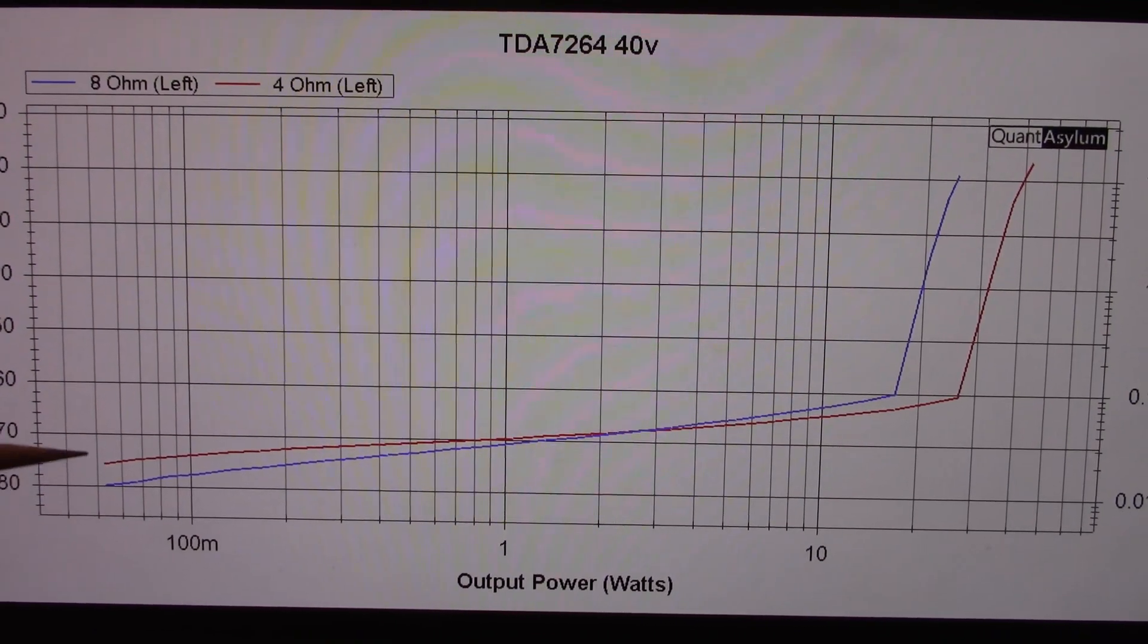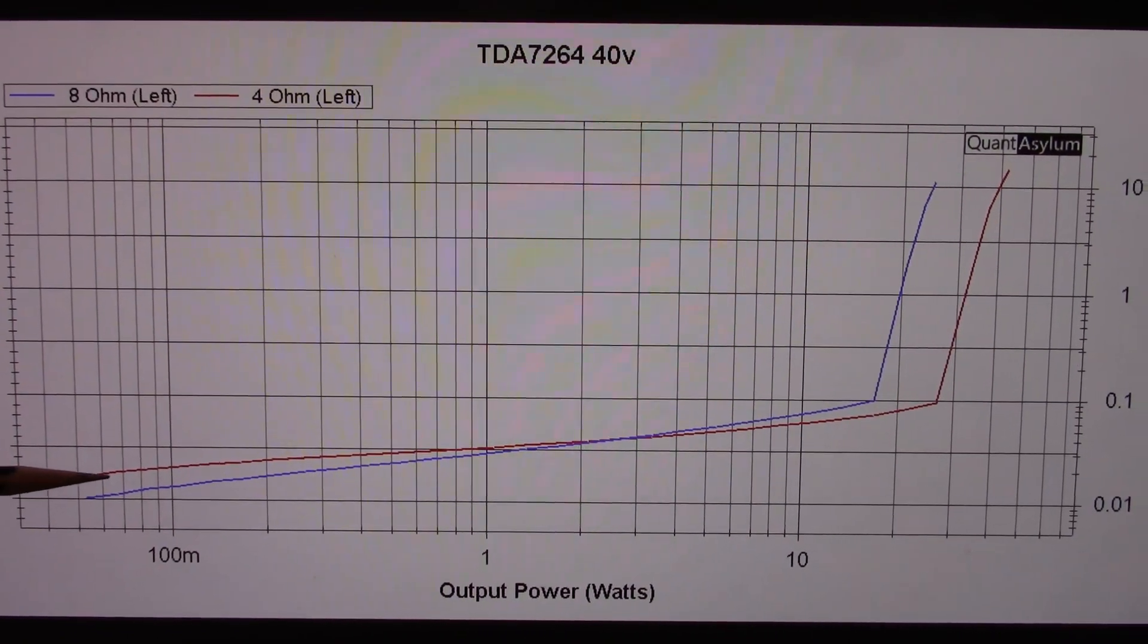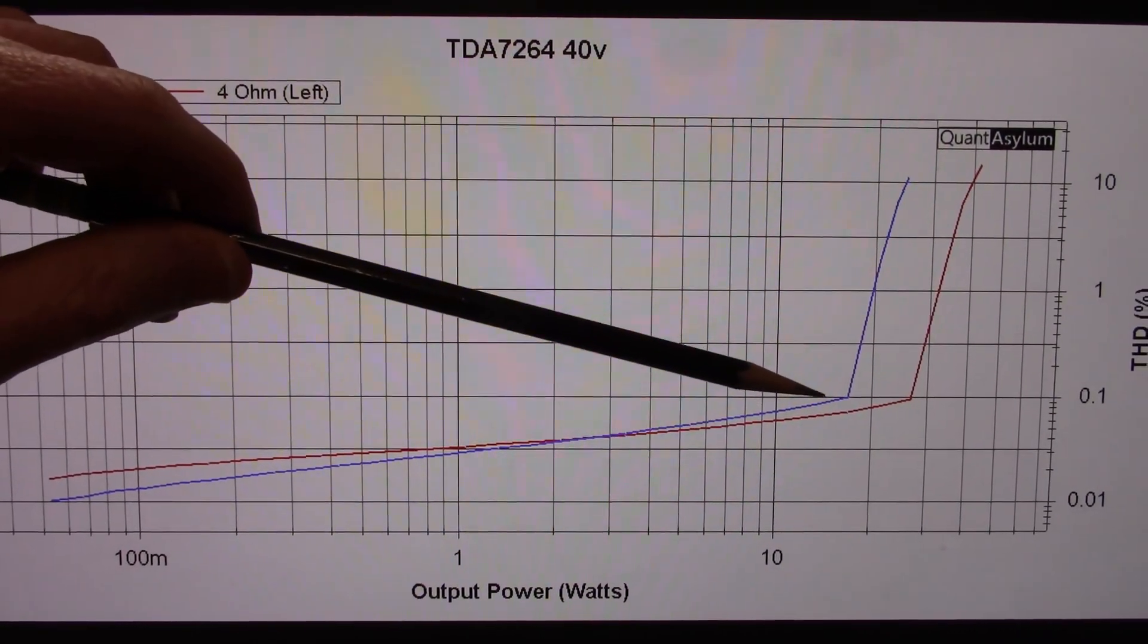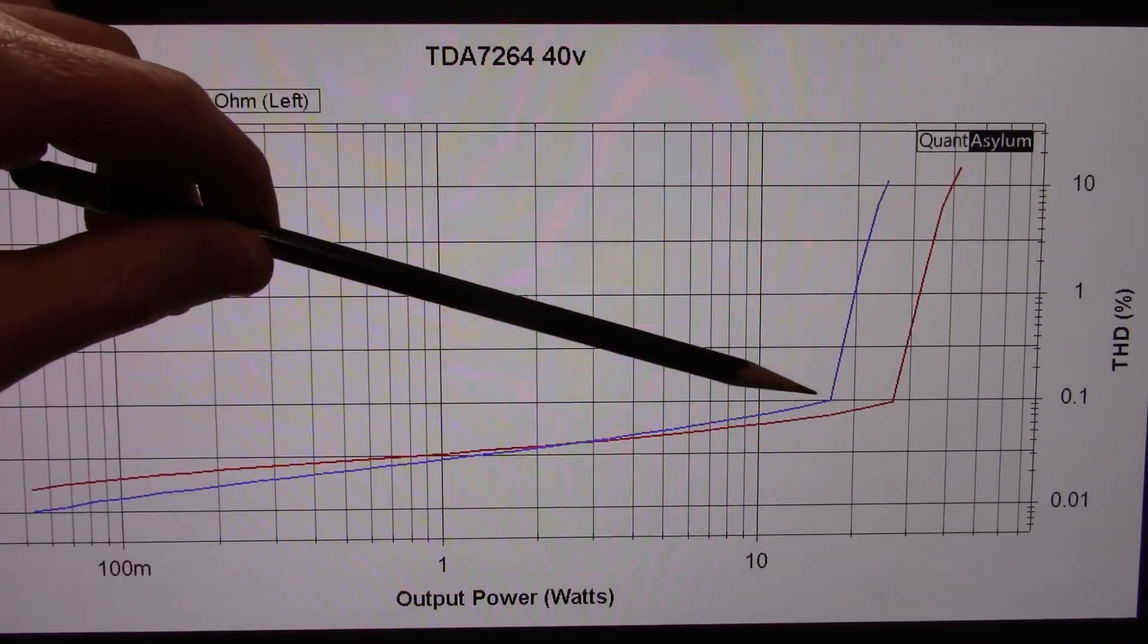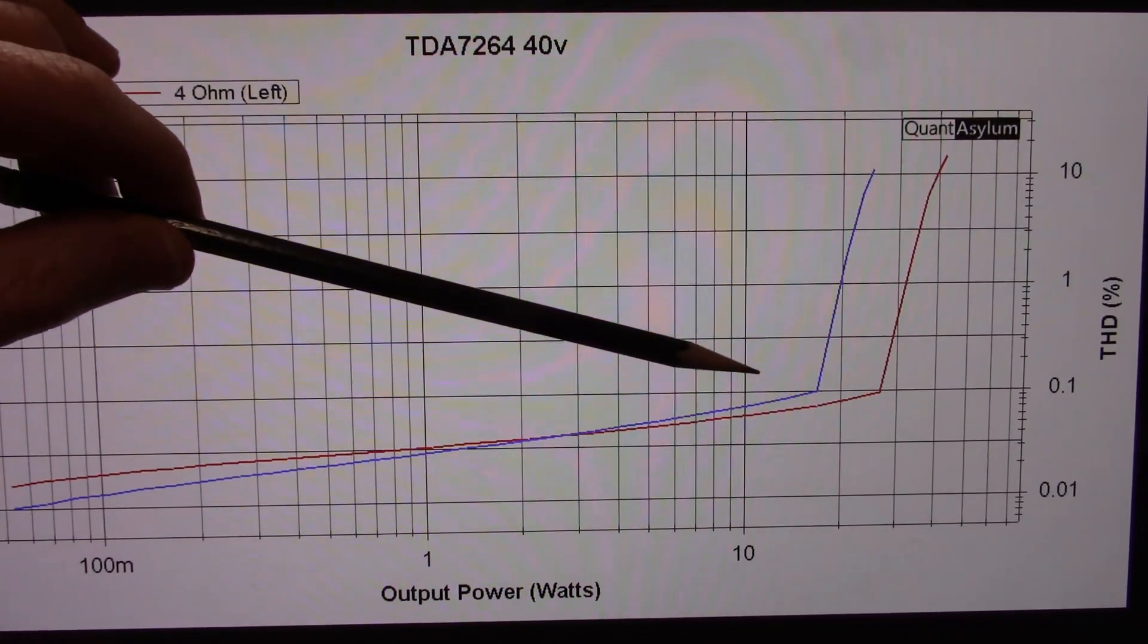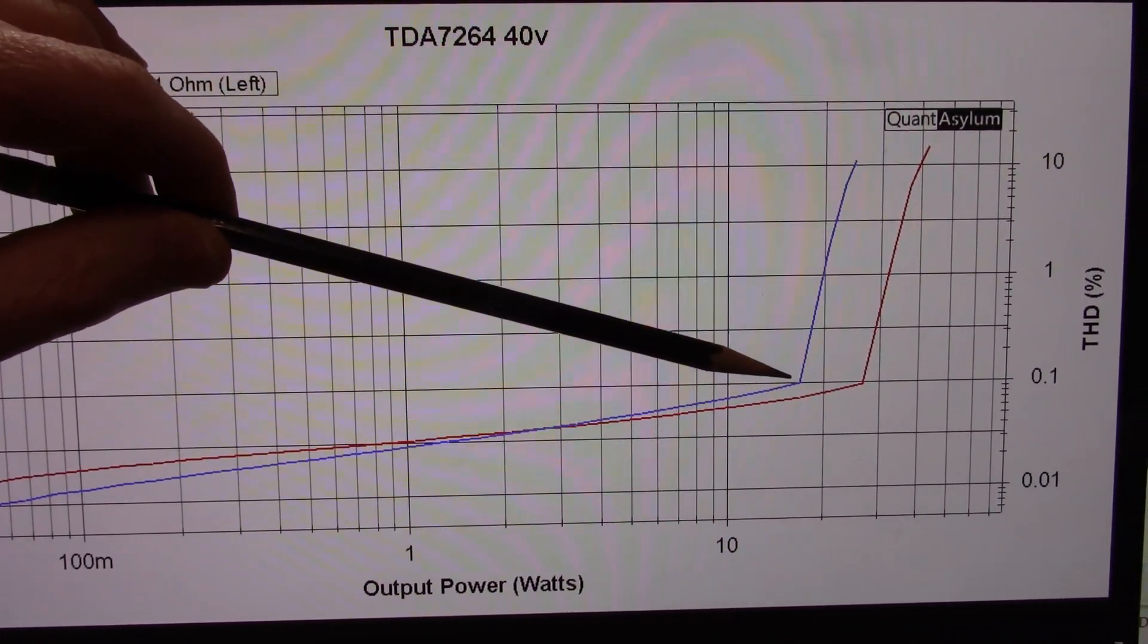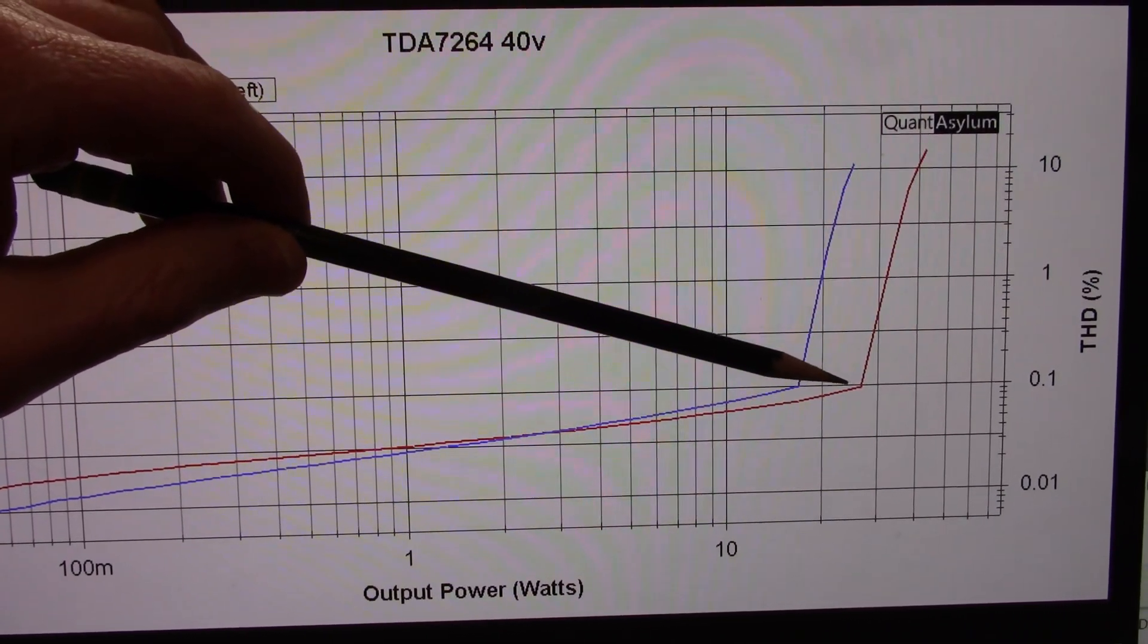We start at a very low level, we're down below minus 70 dB close to minus 80 dB, and we gradually increase until we hit clipping. We stay under 0.1 percent with this amplifier. We're going above the 0.1 line here at about 16 watts 8 ohms and that's 25 watts 4 ohms.